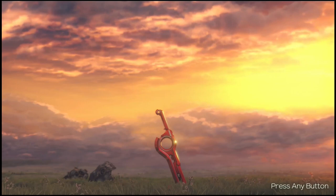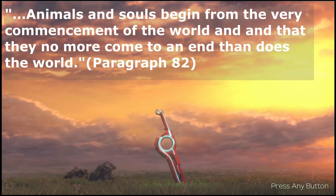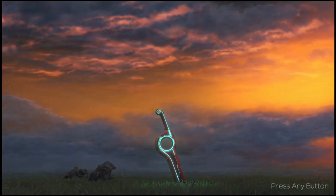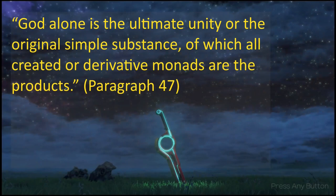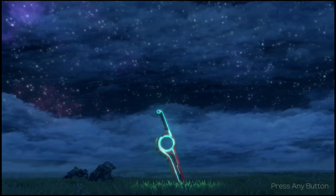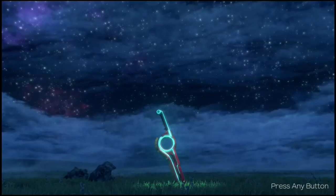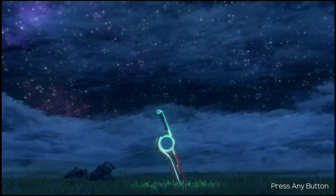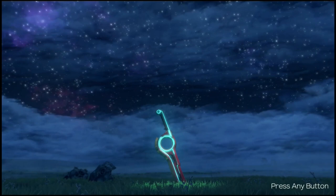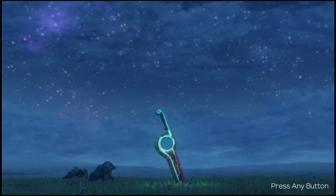Leibniz says in paragraph 82 that like Monads, all souls and animals were created at the beginning of the world and cannot truly die unless the whole world ends. In paragraph 47, God alone is the ultimate unity — the original simple substance from which all created Monads are products, meaning Monads emanate from God's being. They contain God's ideas, knowledge, and will, and are automatons programmed to enact God's will. When Monads have conflicting goals, God must directly intervene to give one Monad's action priority over another.